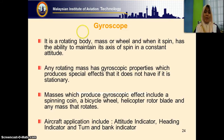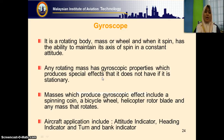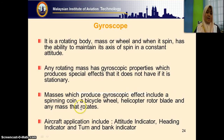A gyroscope is any rotating mass having gyroscopic properties that produce a special effect that it does not have if it is stationary. Applications include the spinning top, bicycle wheel, helicopter rotor blade, and any mass that rotates.